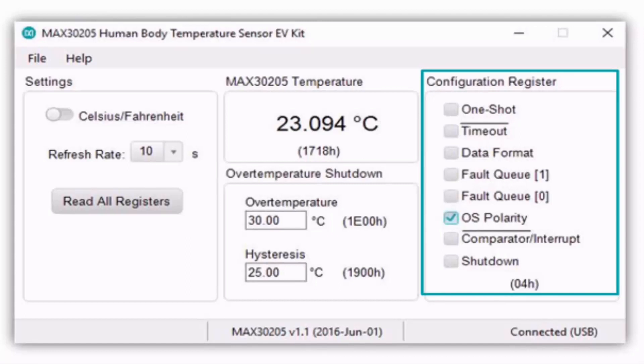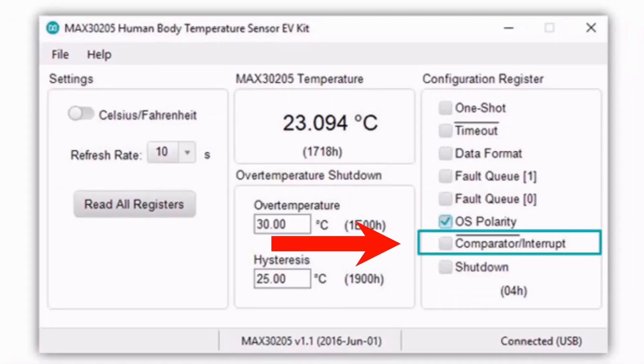The configuration register can be modified using the checkboxes highlighted here. In thermostat mode we simply set bit D1, the comparator/interrupt bit, to 0. This is the default value so no need to change it in the software.